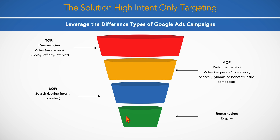As people have more of a conversation rather than just typing in keywords, successful marketers will not just be relying on high intent keywords. My very strong prediction is that the number of new searches — currently at 15% — is going to get much, much higher. The way that we're building out success is by using this full funnel approach, leveraging the different types of Google Ads campaigns.